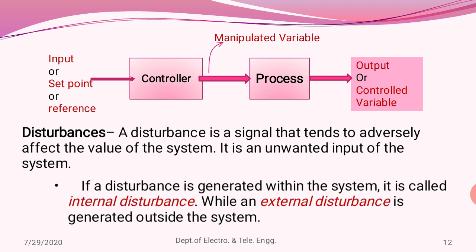These disturbances are unwanted signals and are hard to eliminate. Disturbances tend to affect the stability of the system. Disturbances can be of two types: internal disturbances, which are generated within the system, and external disturbances, which are generated outside the system.